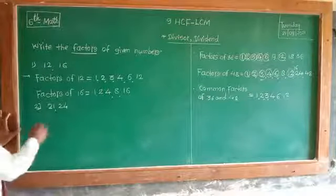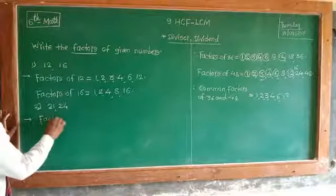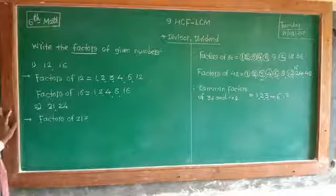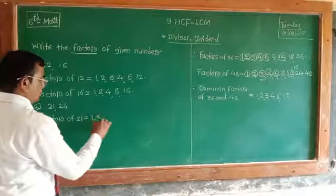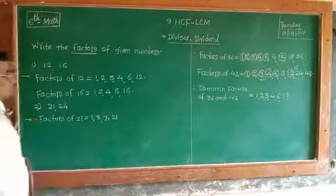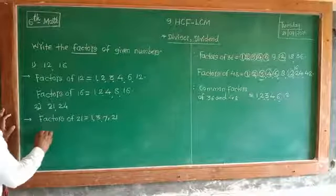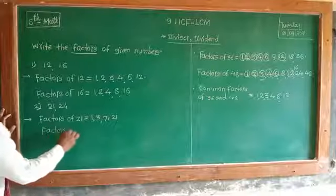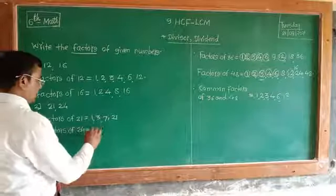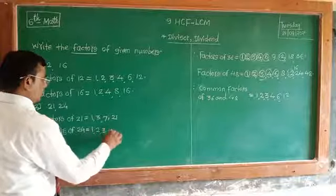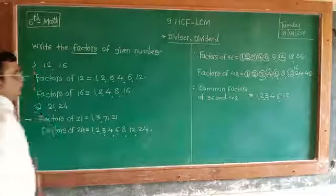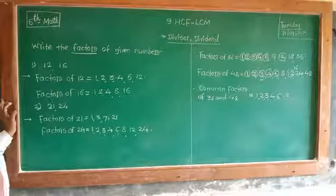Factors of 21 are: 1, 3, 7, and 21. And the factors of 24 are: 1, 2, 3, 4, 6, 8, 12, and 24.